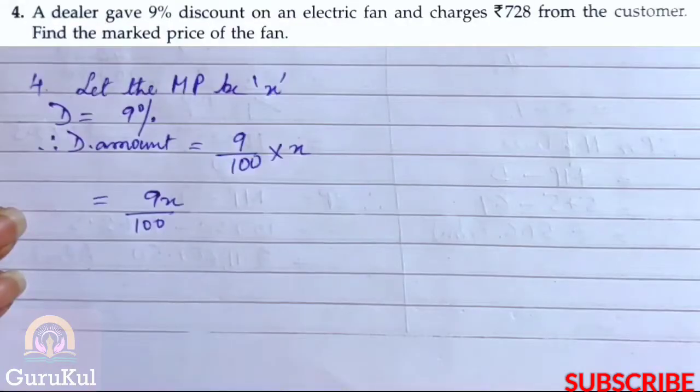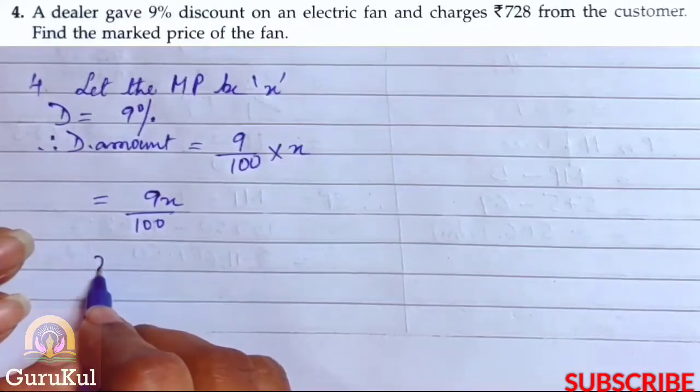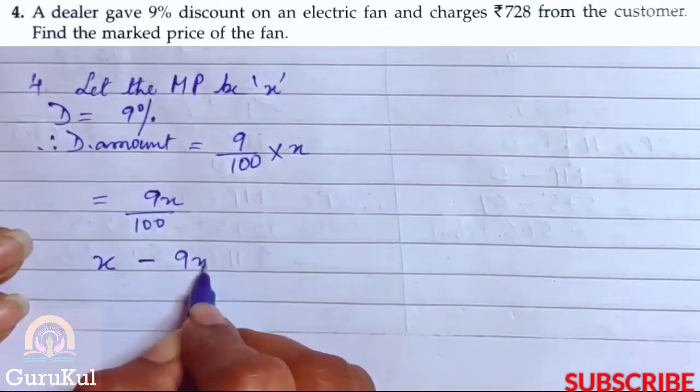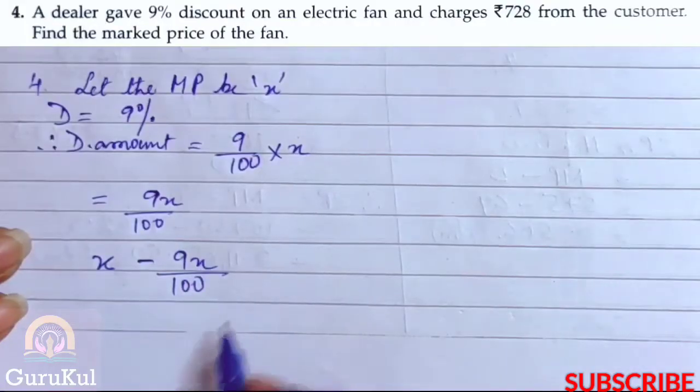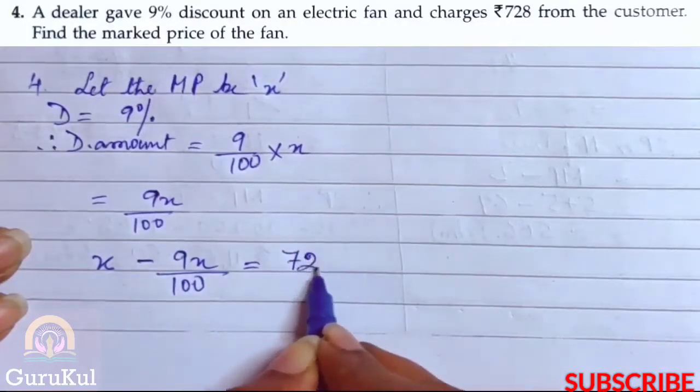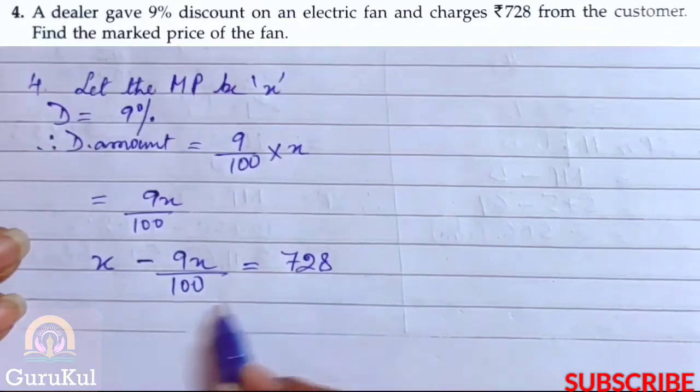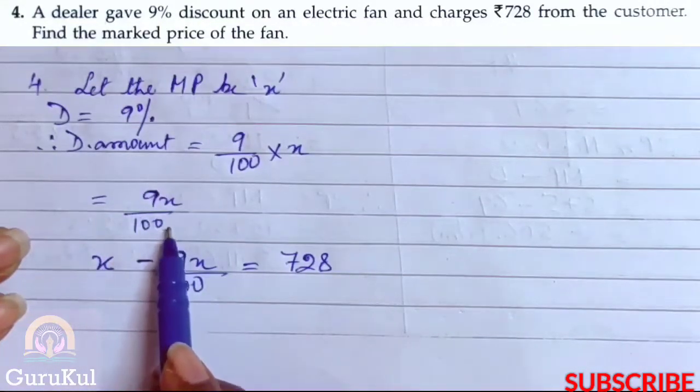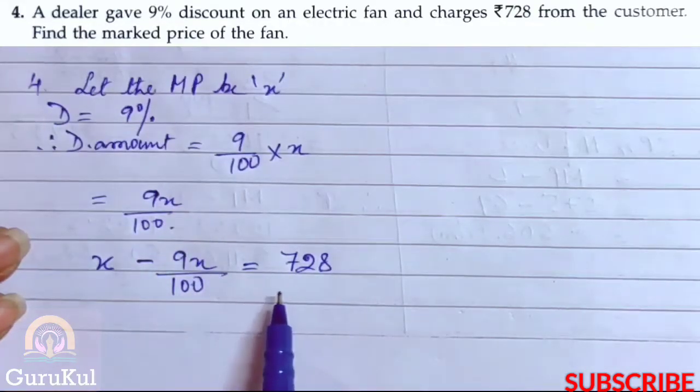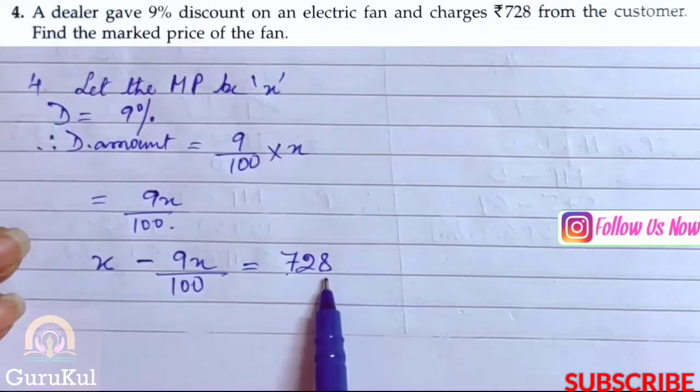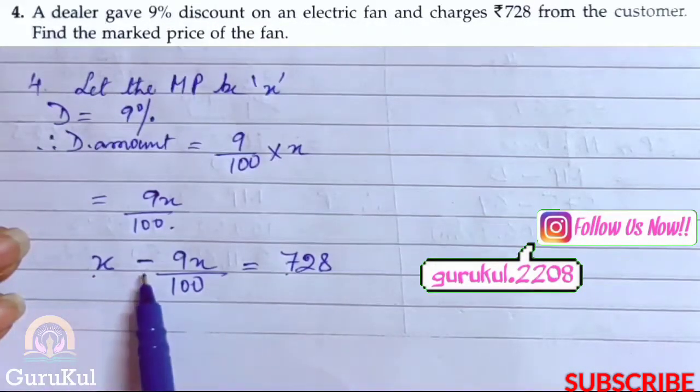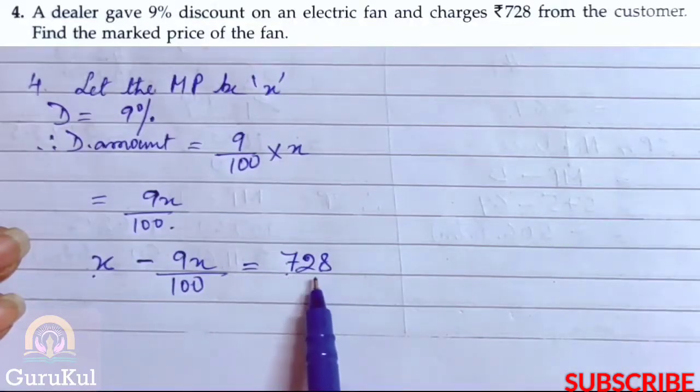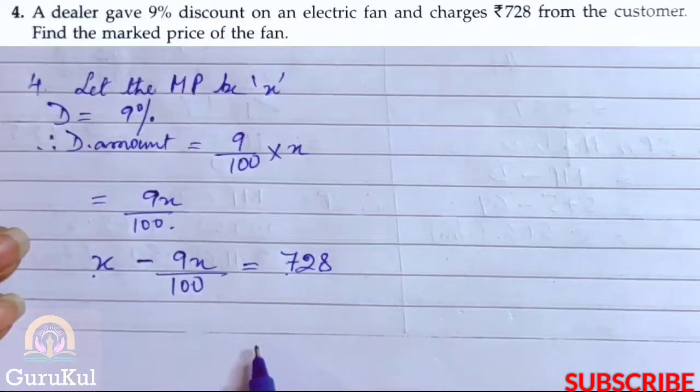Now it is given that the amount which the customer paid was Rs.728. That means marked price, which is X, minus the discount amount which is 9X by 100, will give us the amount paid by the customer which is 728. So marked price say discount ka amount ko less karenge. That will give us 728.